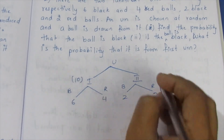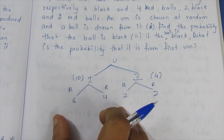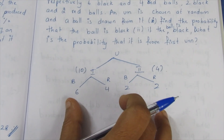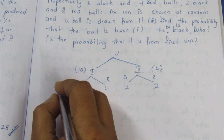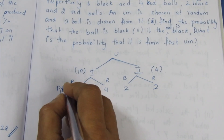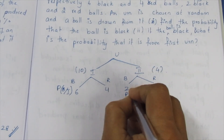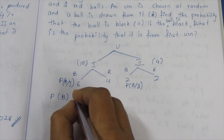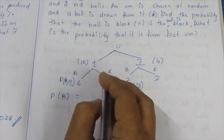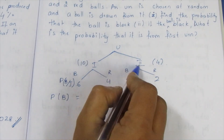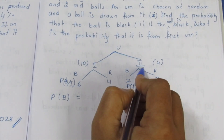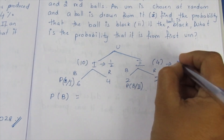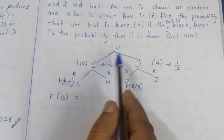Here the total is 10 for the first urn and 4 for the second urn. We are selecting black balls. To solve this, we consider which urn is chosen first. The probability of choosing each urn is 1/2 and 1/2. This is important — first, what urn is chosen, and what is the probability of choosing that urn.